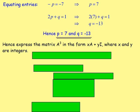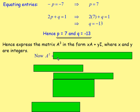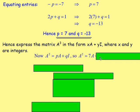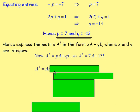Hence P equals 7 and Q equals -13. So we were asked to find the values of P and Q and we have done that. Afterwards it said: hence express the matrix A³ in the form XA plus YI, where X and Y are integers. Well, we know that A² equals PA plus QI, and we just found P and Q, so A² equals 7A minus 13I. How then would we find A³?